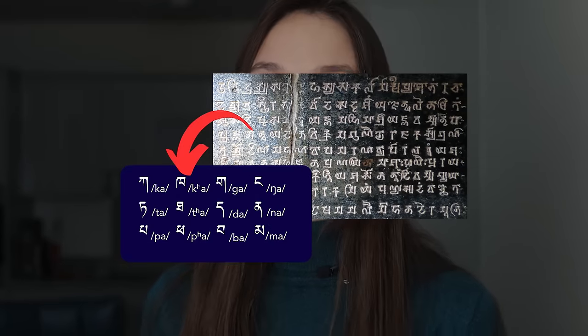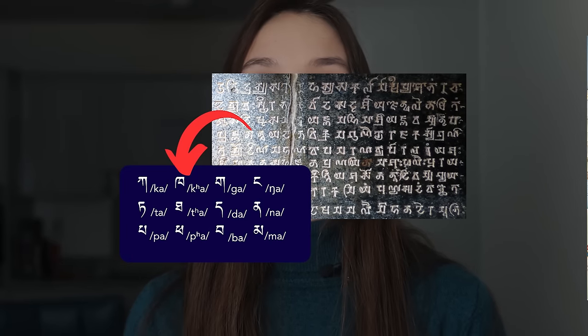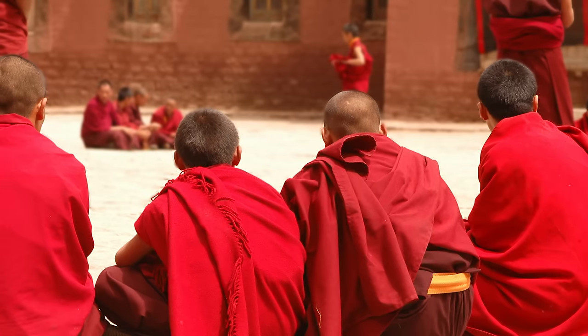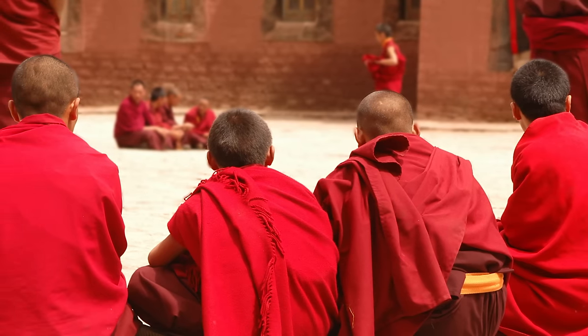The script was adapted from the Gupta script in the 7th century by the legendary minister Thonmi Sambhota. The most mind-boggling thing is that since the creation of the script, the orthography hasn't changed much, making Tibetan the language with the oldest orthography rules. Imagine how much the language has changed since that time — so whatever is written, you can know for sure it would be read completely differently. This complication, though, has a benefit: speakers of Tibetan are able to read ancient texts without much issue.